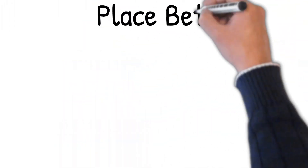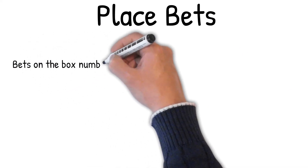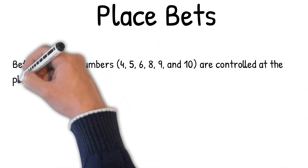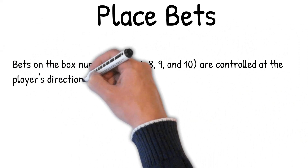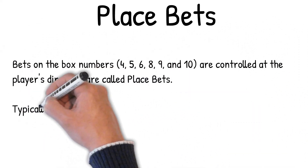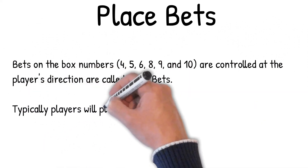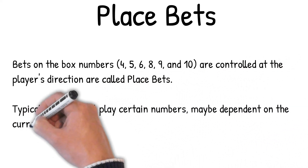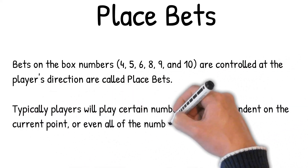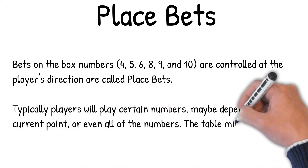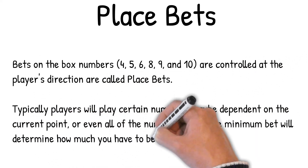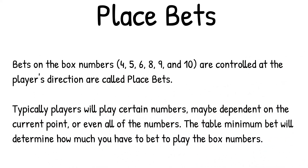Place bets. Bets on the box numbers — four, five, six, eight, nine, and ten — controlled at the player's direction are called place bets. Typically players will play certain numbers, maybe dependent on the current point, or even all those numbers. The table minimum bet will determine how much you have to bet to play the box numbers.